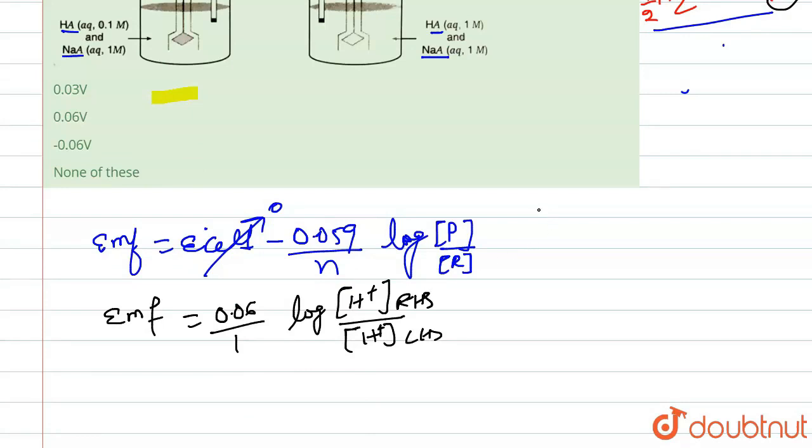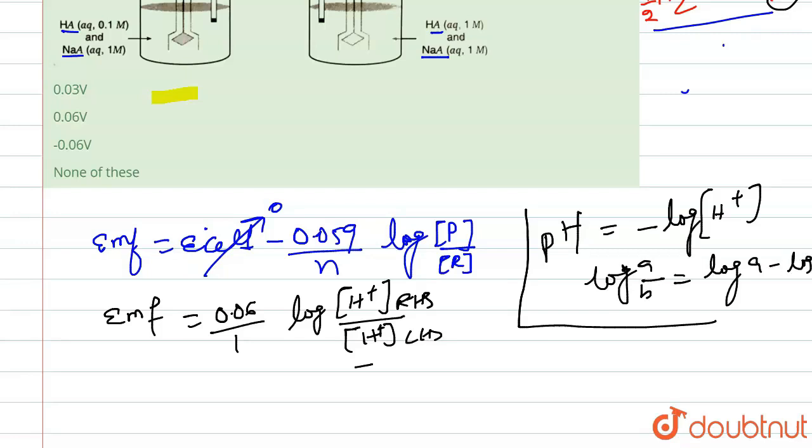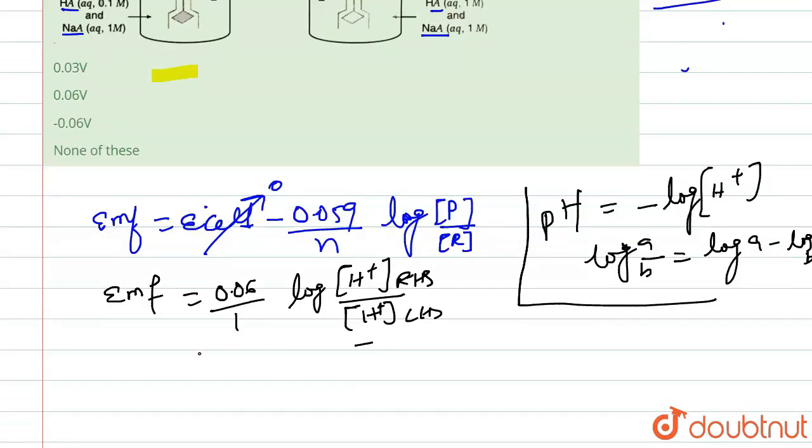Moving ahead, EMF equals to... we can do some mathematical manipulation. As the value of pH equals to minus log of H+, what we can do is manipulate this equation as log of A upon B equals to log A minus log B. So we will use this right here.